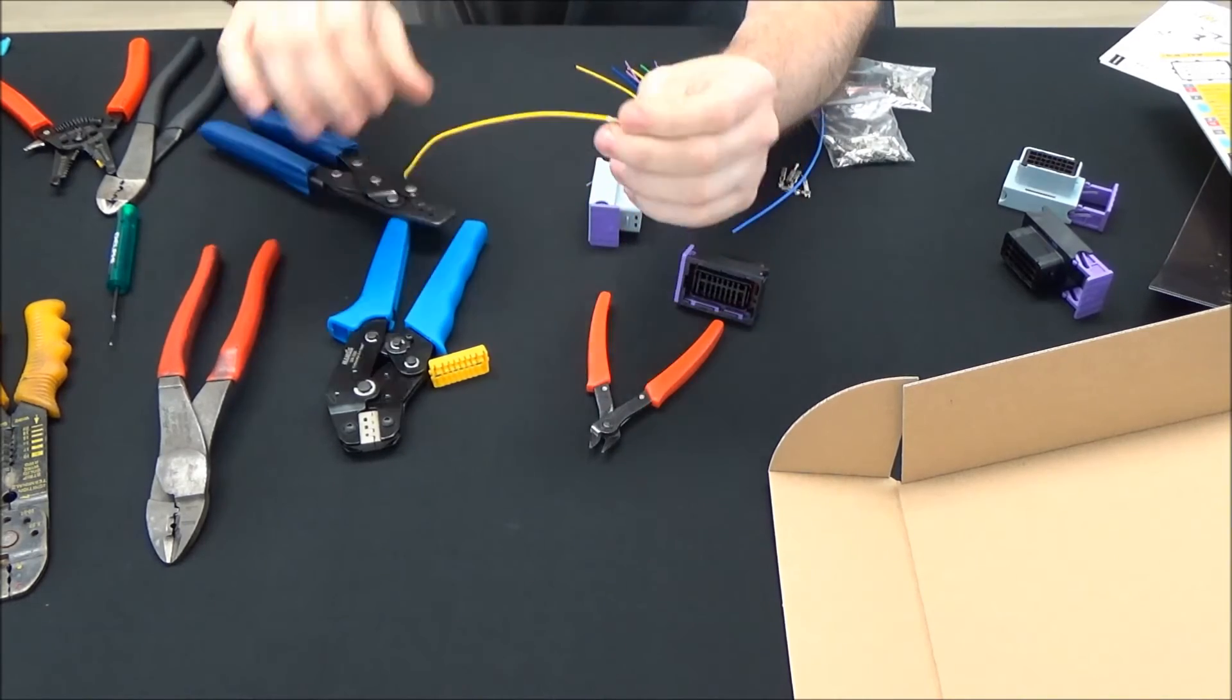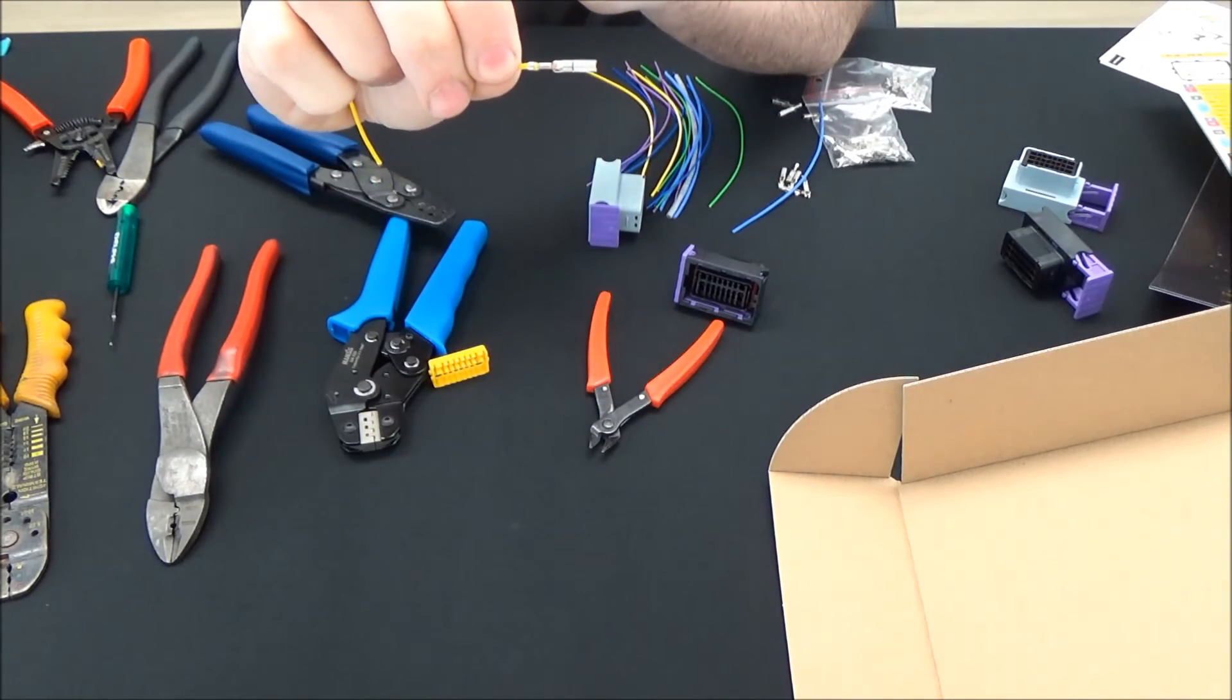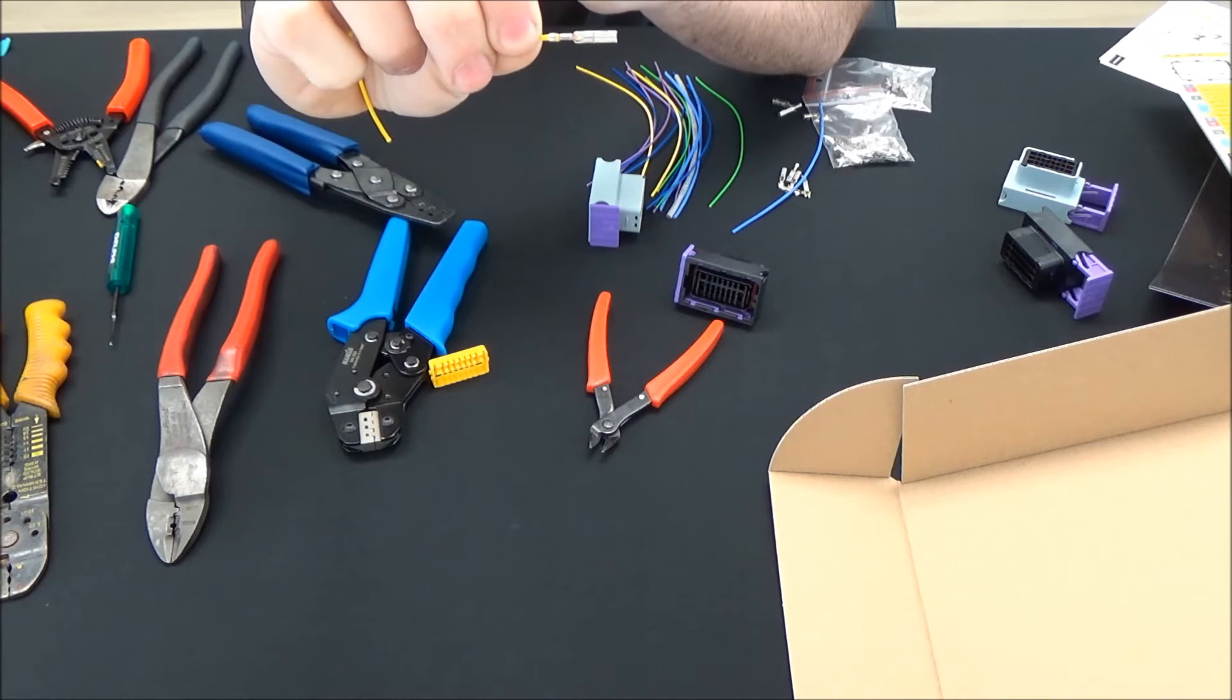Then I'll move up to the next jaw bigger to crimp the terminal on the insulation itself. Once that's crimped, take a good look at it. See how the conductor is right on that first crimp. Then it's crimped around the insulation.